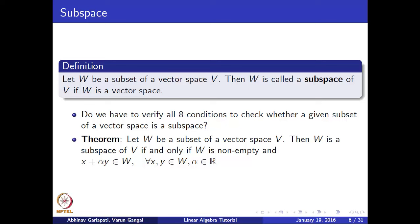A related definition is that of a subspace. A subset W of a vector space V is said to be a subspace if W is itself a vector space, meaning W must be closed under vector addition and scalar multiplication and satisfy the eight axioms. Since W is already a subset of a vector space, we only need to verify two conditions: firstly, that W is non-empty; and secondly, that for any two elements x and y from W and any real number alpha, x + alpha·y belongs to W.